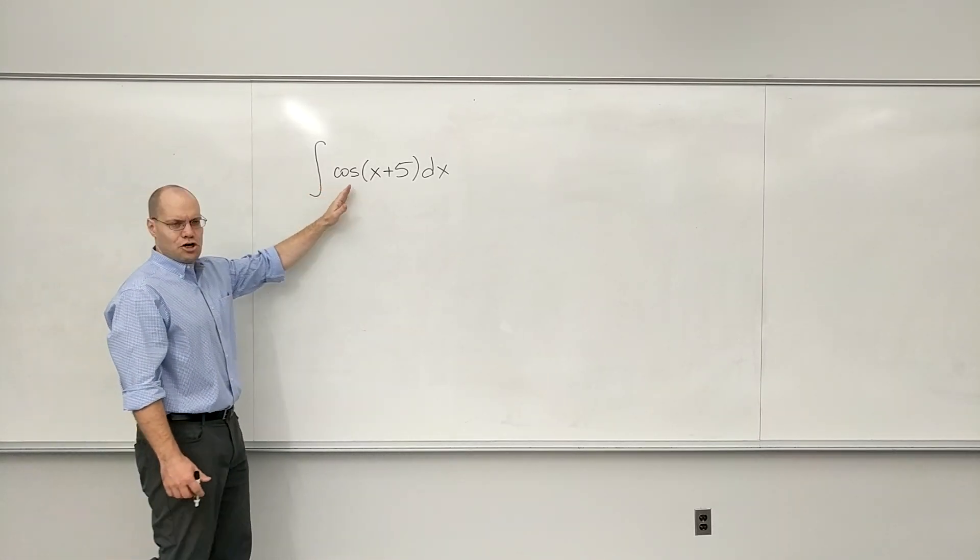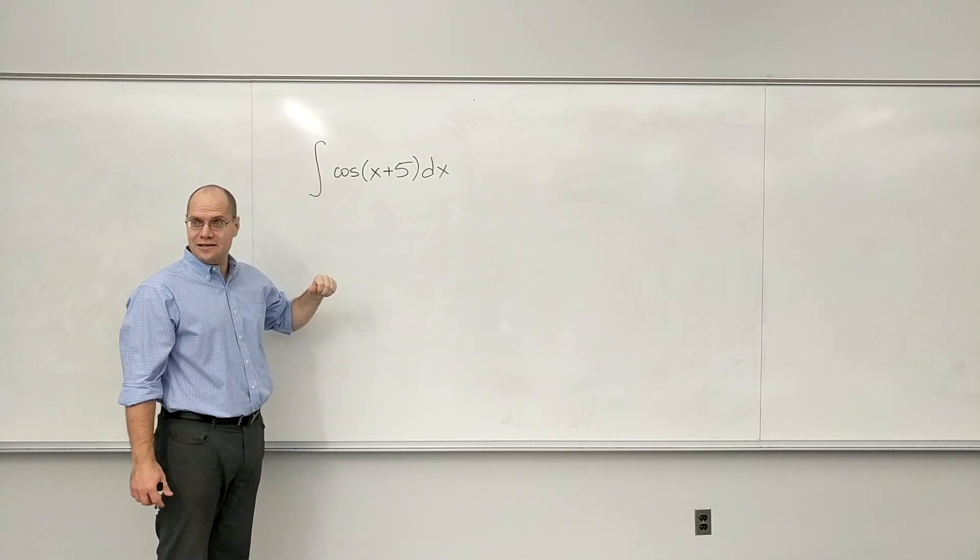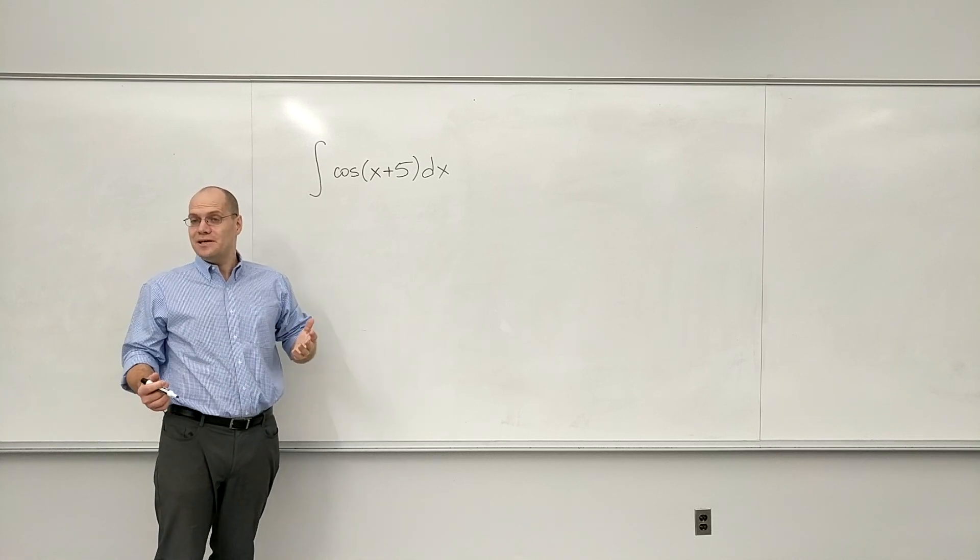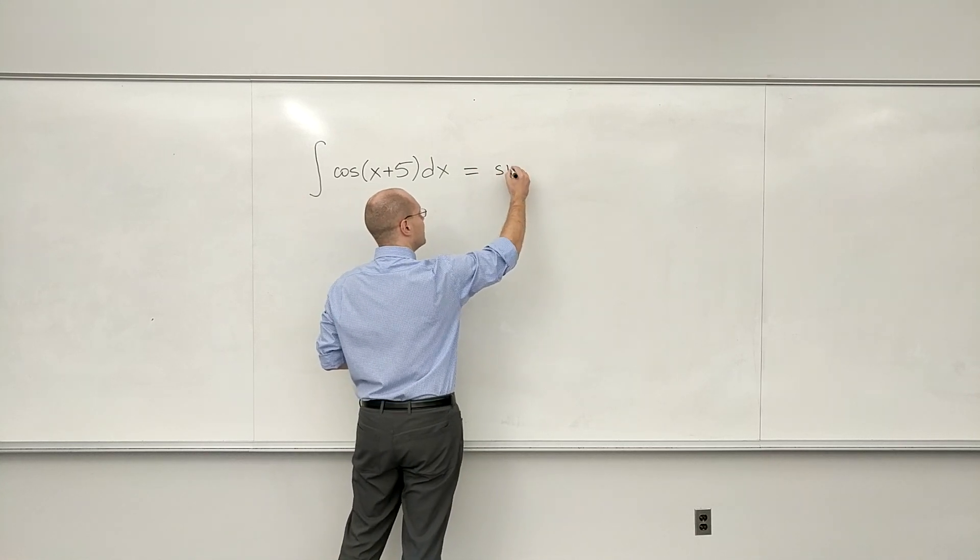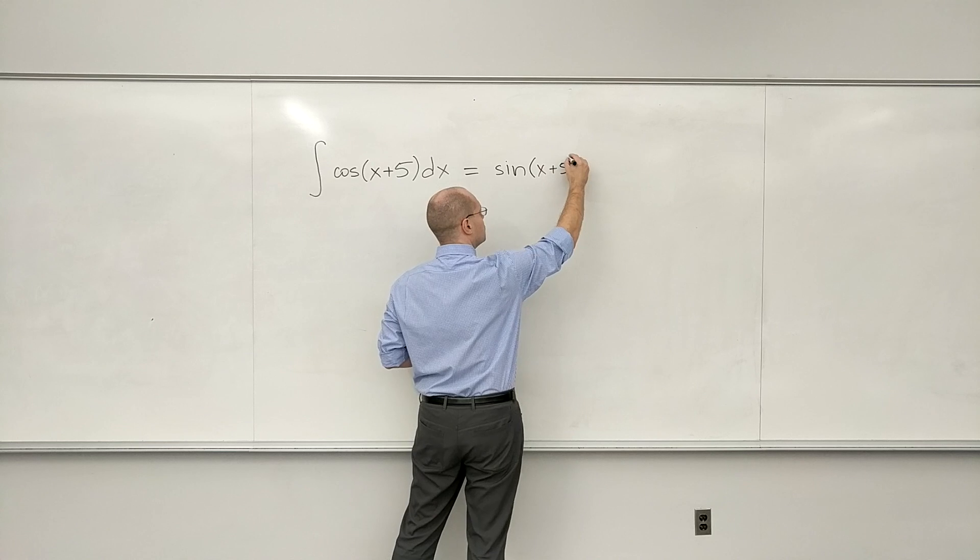So, you see cosine. You tell yourself right away, I think it came from a sine. Sine of what? Sine of x plus 5. Can it be that simple? Well, at first you may not be sure. But then you try it. It's the only possible logical thing that could work here.